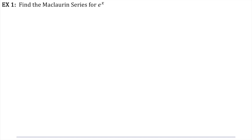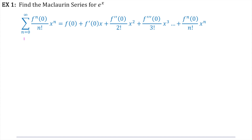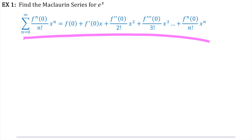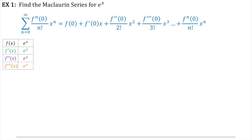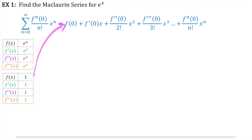So we're going to find a Maclaurin series for e to the x. This should look familiar to you. If we're going to find a Taylor polynomial or a Maclaurin polynomial, then we need to figure out the derivatives first. So we'll take the various derivatives of e to the x. And this is a Maclaurin polynomial, so we're going to find each of those derivatives at zero.